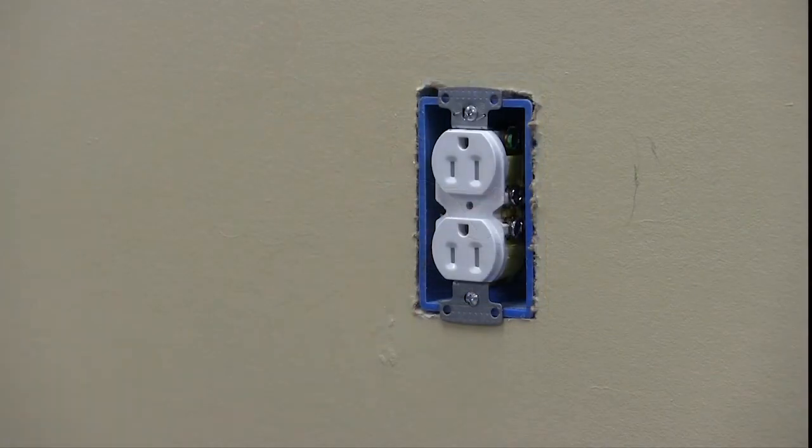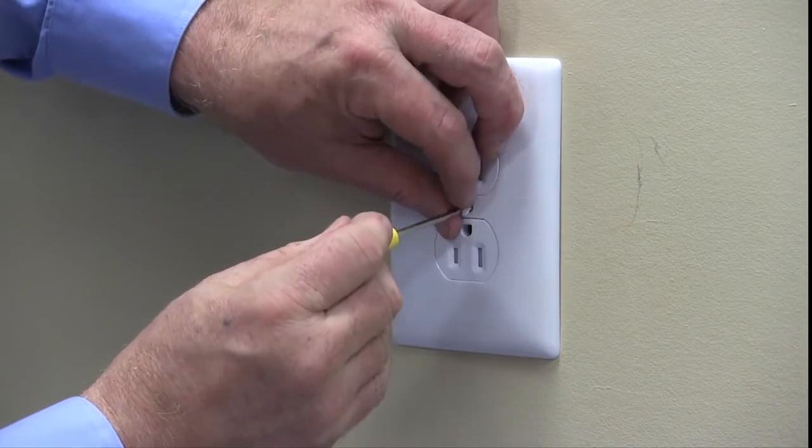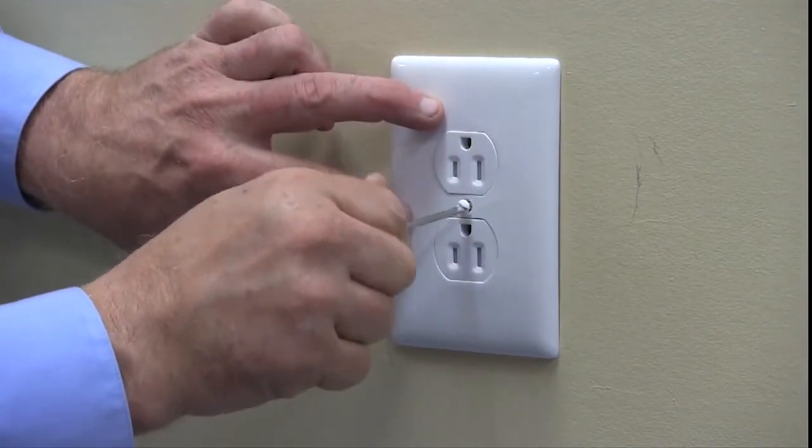Fold the wires, push them into the box, and mount the receptacle. Finish the outlet by fastening a wall plate.